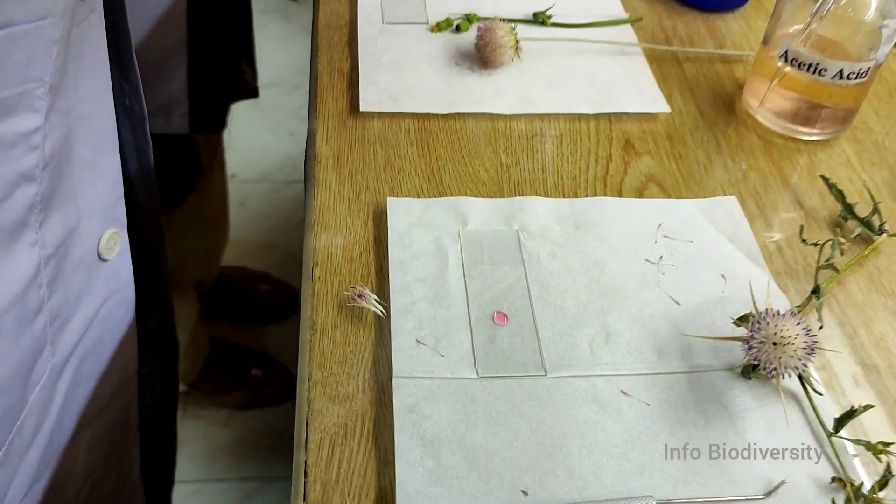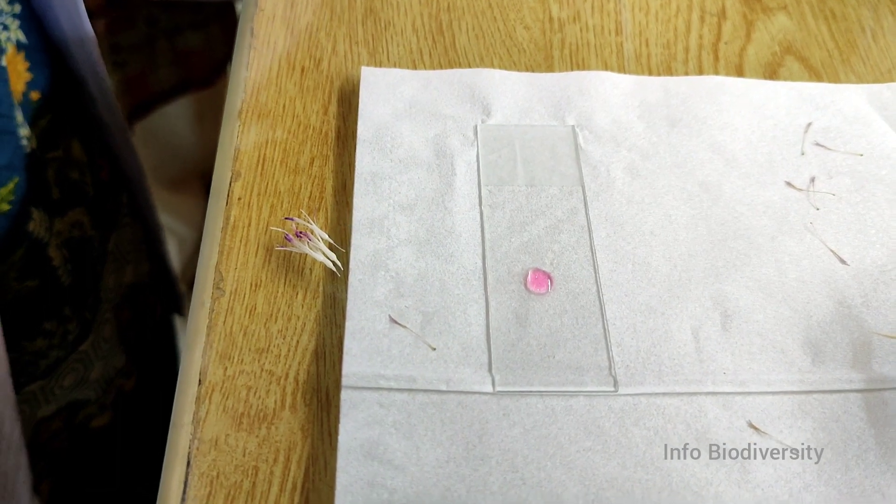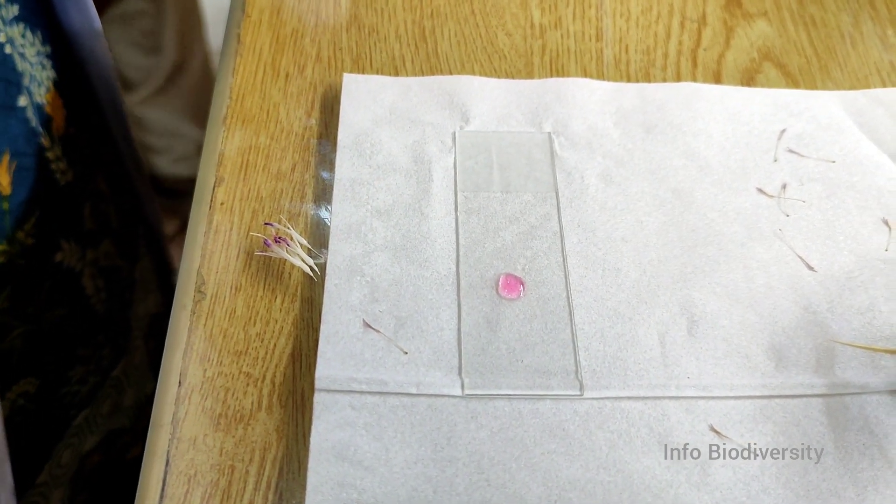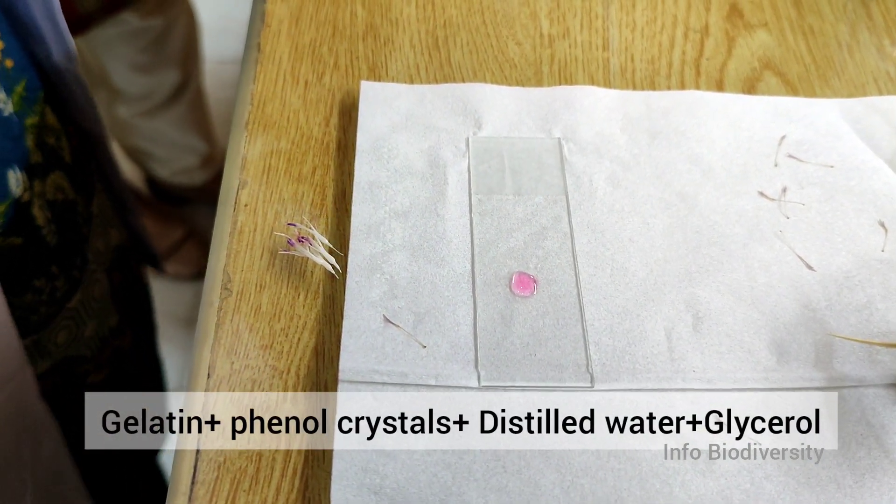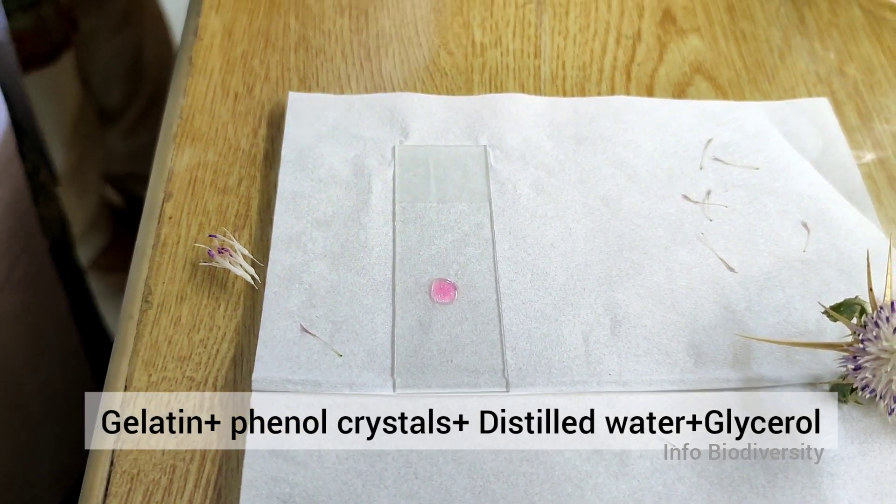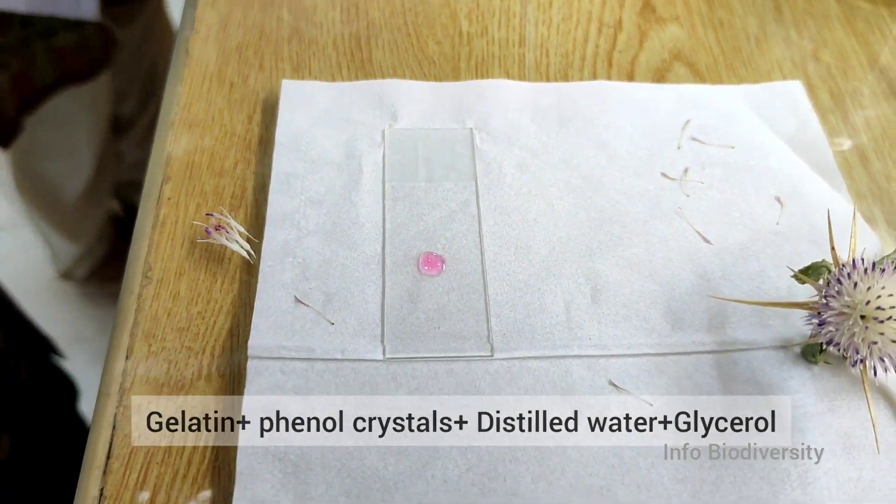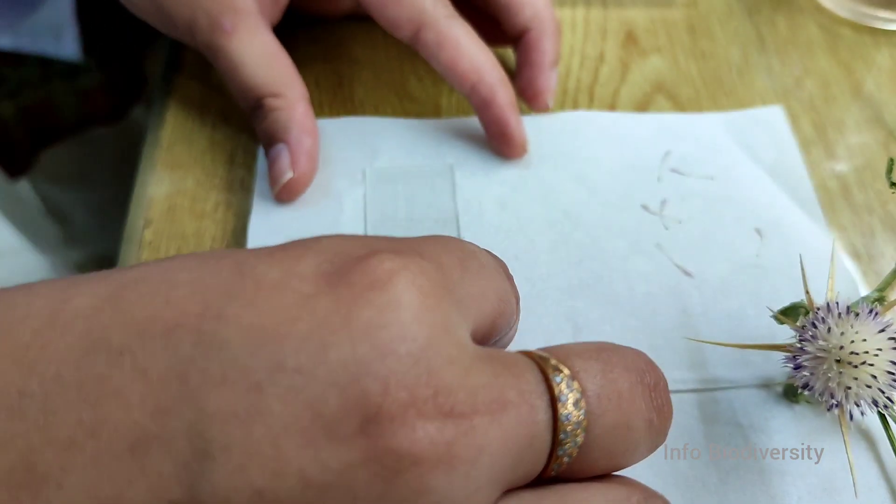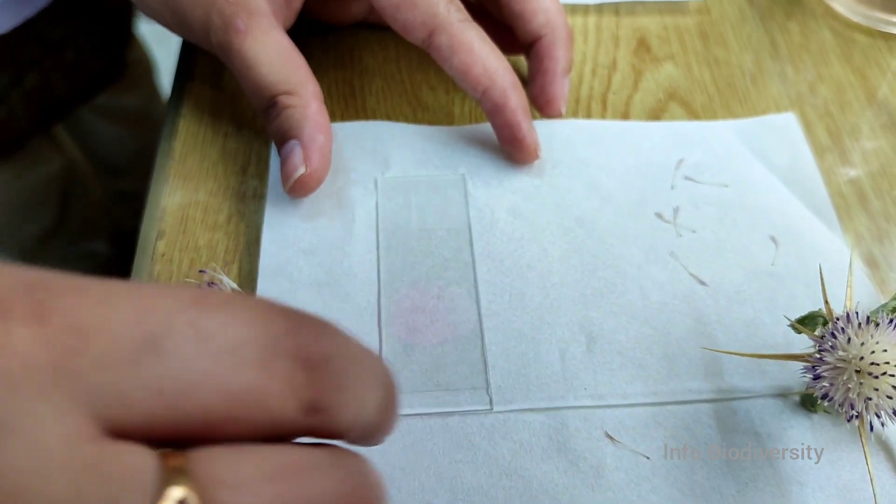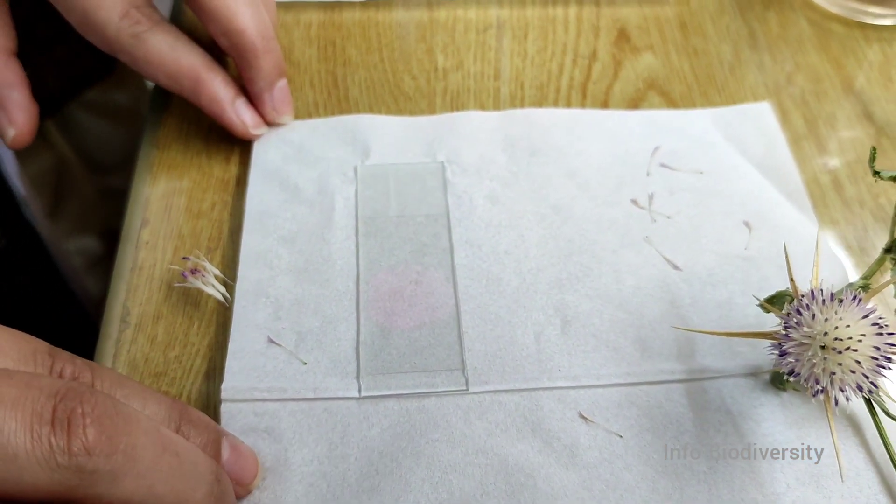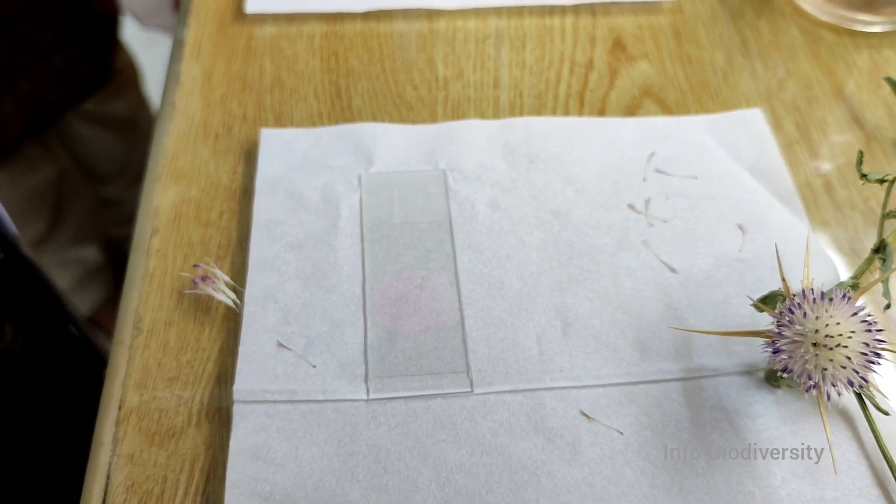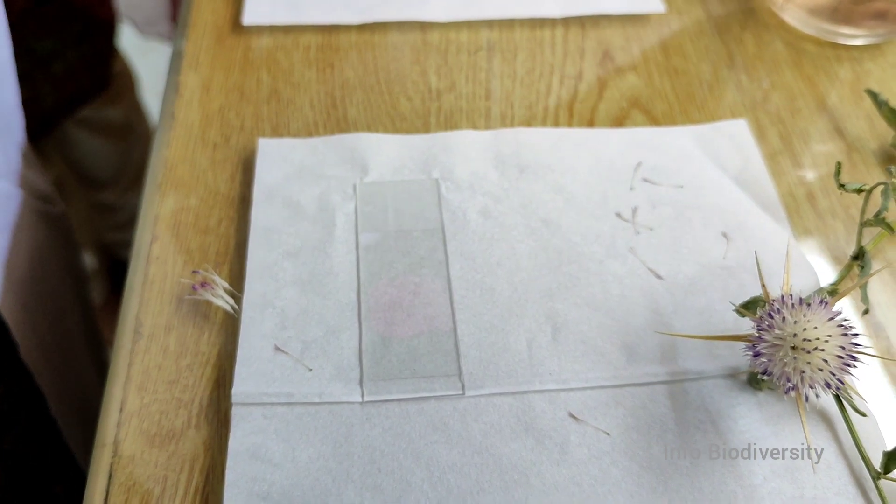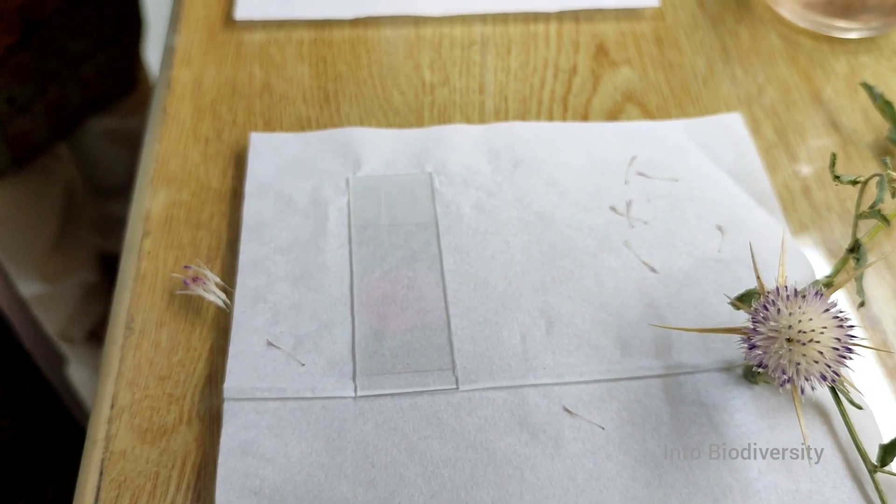Glycine jelly is a stain that is prepared by four chemicals: gelatin, phenol crystal, distilled water and glycerol. By putting a drop of glycine jelly, you have to place the cover slip on the slide in order to equally and uniformly spread the stain to all the pollens.